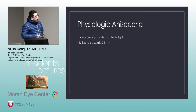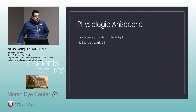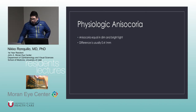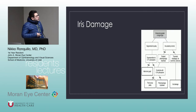For physiologic anisocoria, the difference in pupillary size is usually anywhere from 0.4 to 1 millimeter. Greater than 1 millimeter, we have to think about it probably not being physiologic anisocoria.